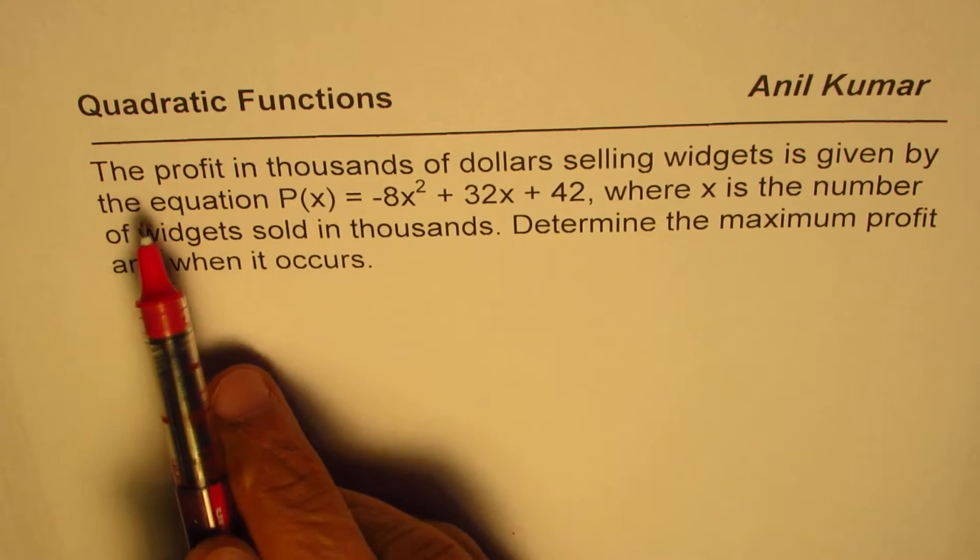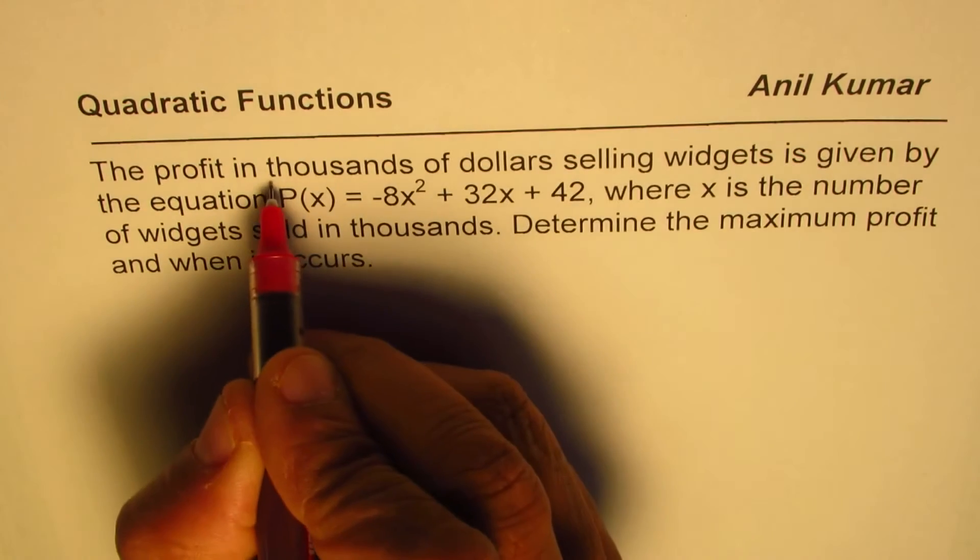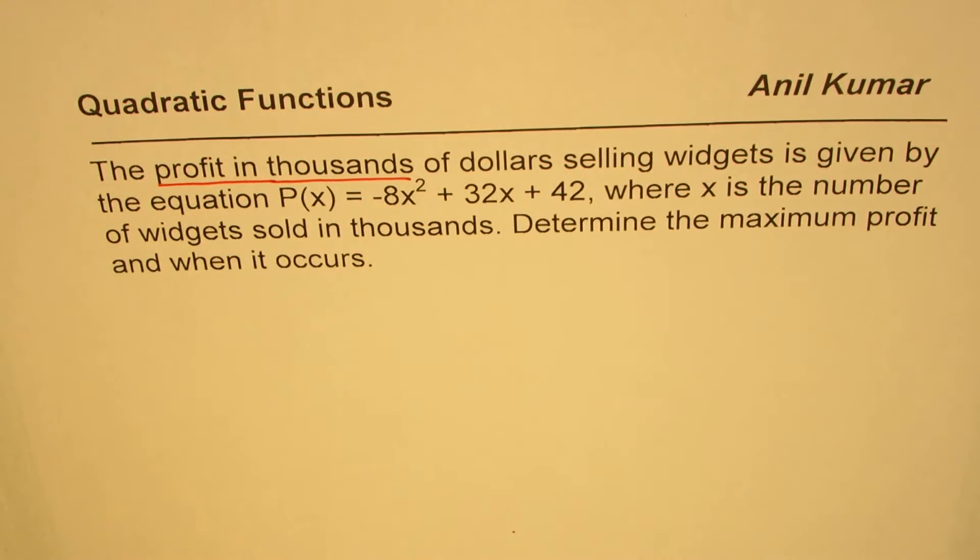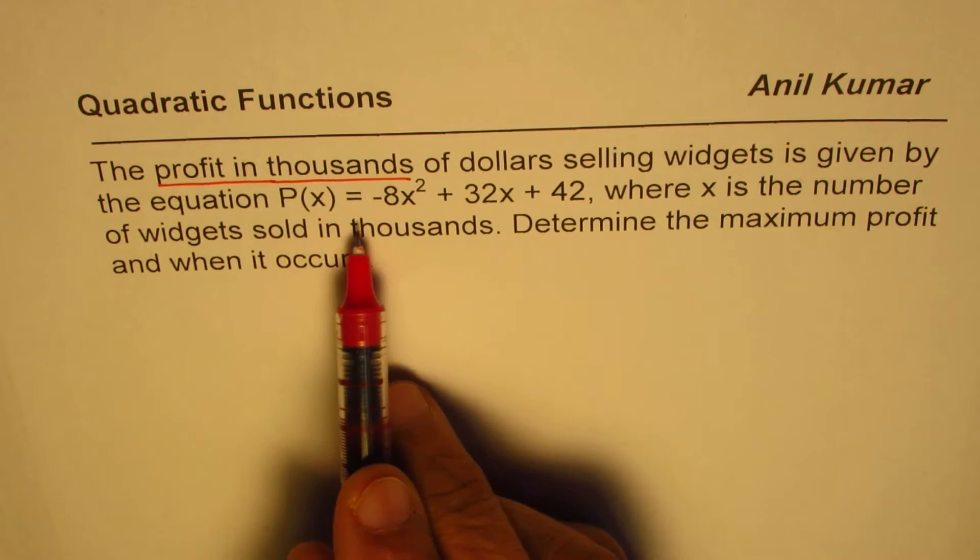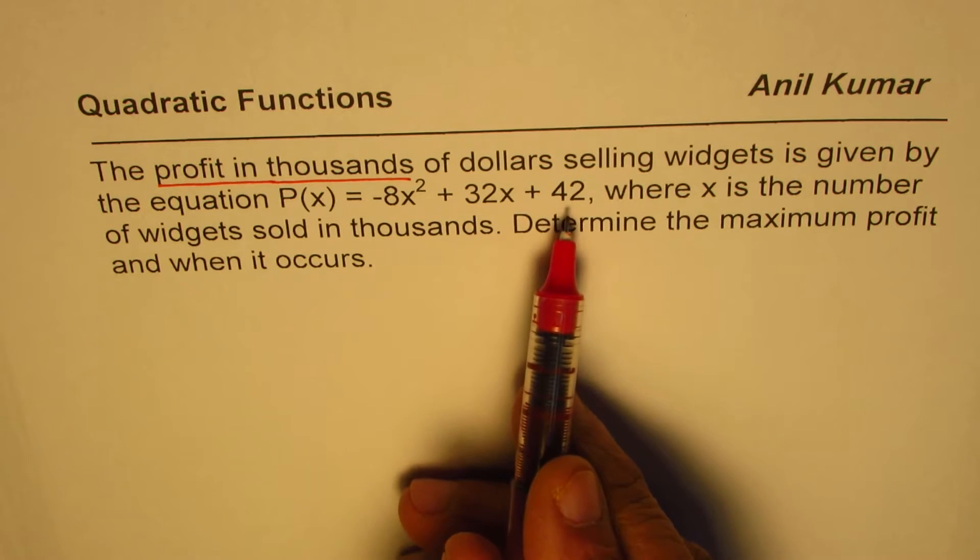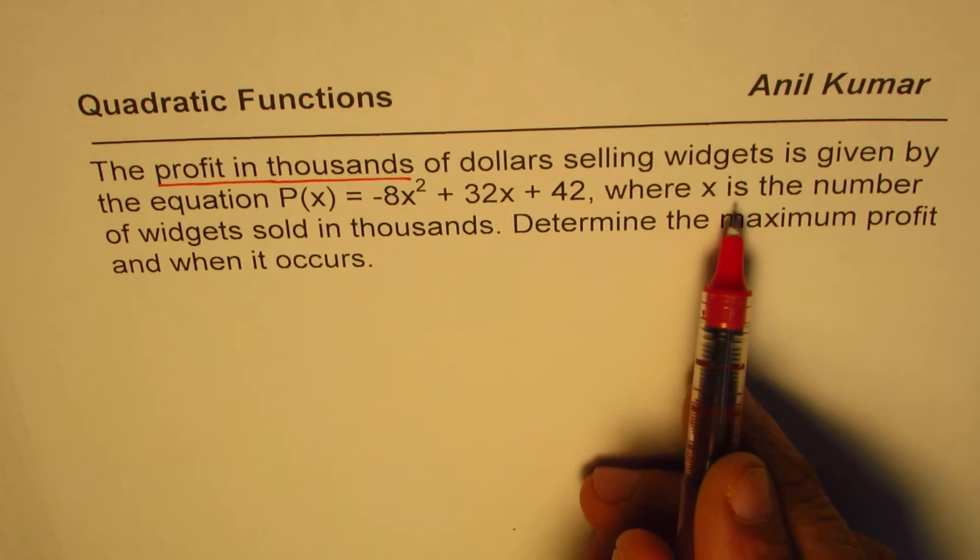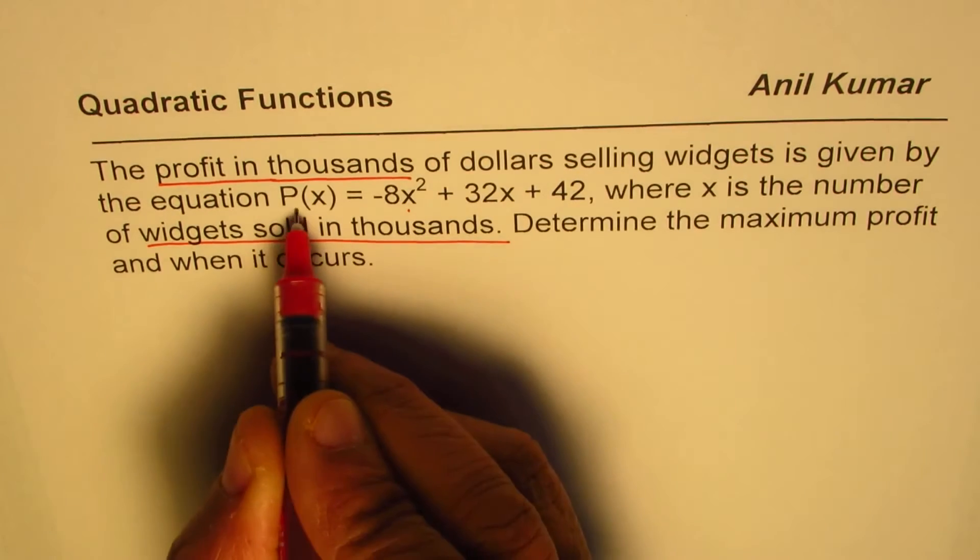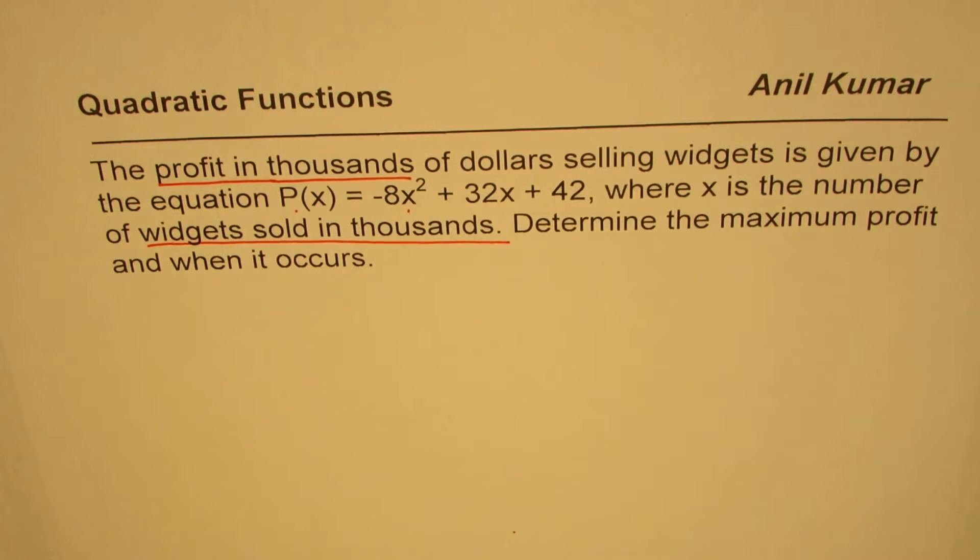The question here is, the profit in thousands—let's underline this word—the profit in thousands of dollars selling widgets is given by the equation P(x) equals minus 8x squared plus 32x plus 42, where x is the number of widgets sold in thousands. So both values x and P(x) are given in thousands.